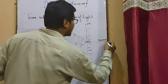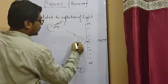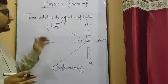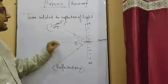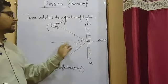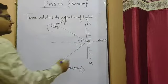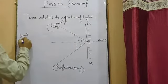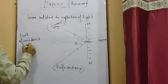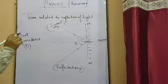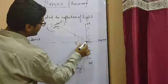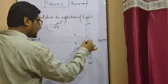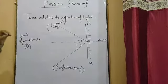A very important term is the normal — an imaginary perpendicular line drawn over the mirror at the point of reflection. This imaginary line is perpendicular to the surface and is known as the normal. Then there is the point of incidence — that is point O — the point over which the incident ray is striking on the surface.